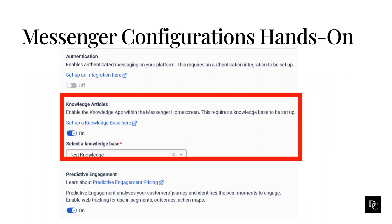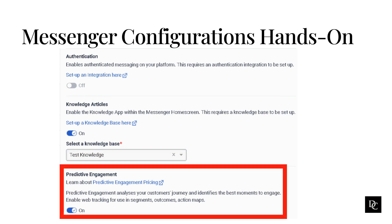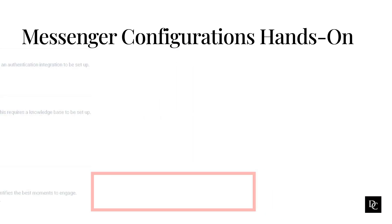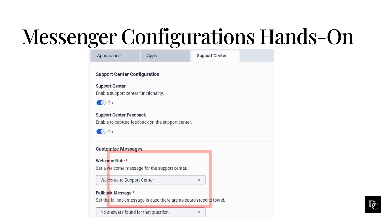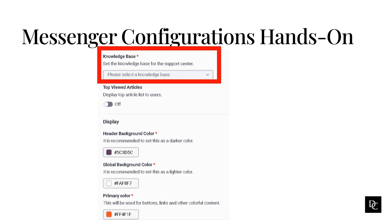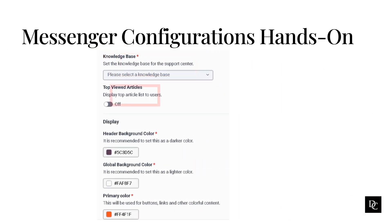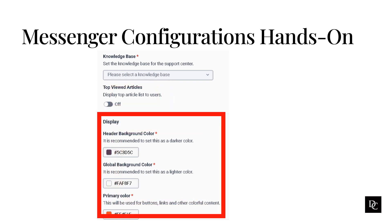Under Knowledge Articles, select whether to enable the Knowledge app. When you enable Messenger Home Screen and Knowledge Articles, users can search for answers to commonly asked questions and topics. Under Predictive Engagement, select whether to enable the Messenger to collect data about customer activity on your website. Predictive Engagement uses this data to track and manage customer activity. Finally, under the Support Center tab, you can enable Support Center functionality and enable Support Center feedback if you want to capture it. A welcome and fallback message can also be set. Under Knowledge Base, you can set the Knowledge Base for the Support Center and set the top-viewed articles to display. Under Display, you can set the header, global and primary colors. After completion, click either Save New Version or Save Draft.